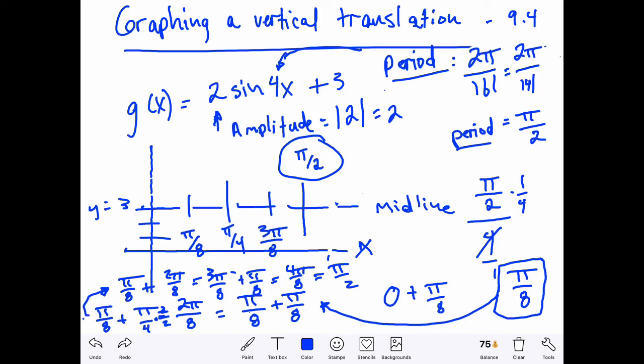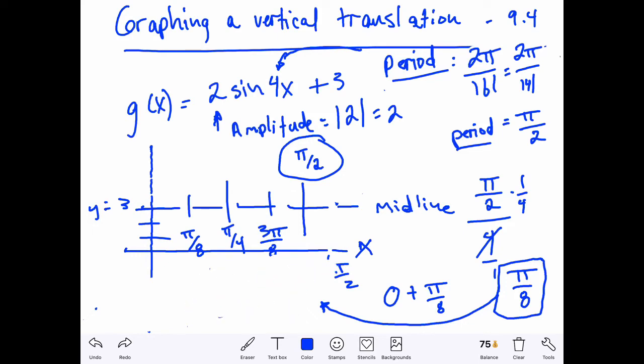So once we've divided our period into four equal sections, then whatever that length is, that pi eighths there, then I want to add that to pi eighths and then add to pi eighths to that again, and I keep adding that amount to find my locations.